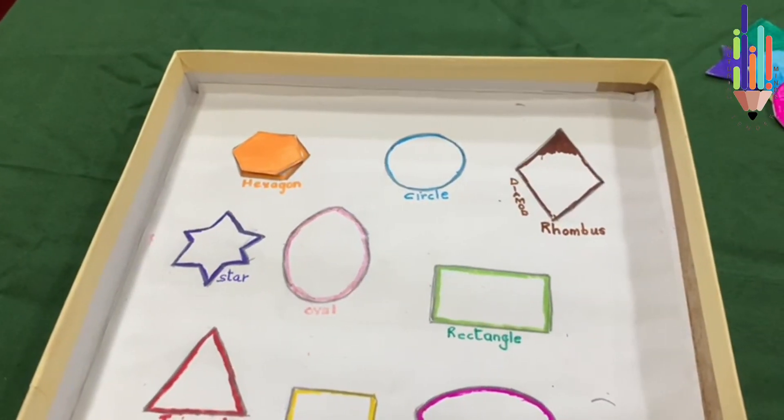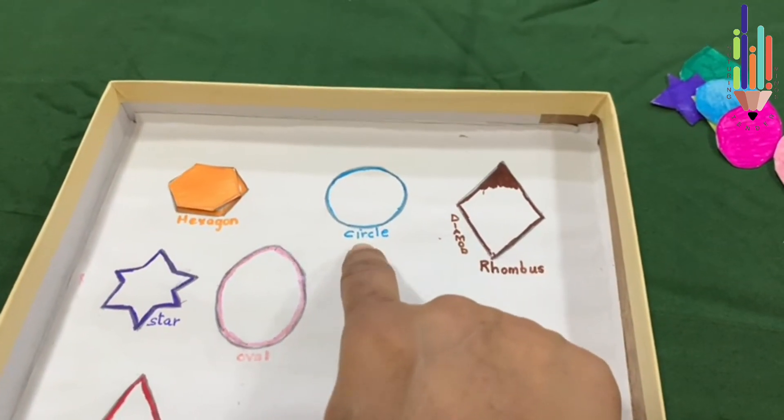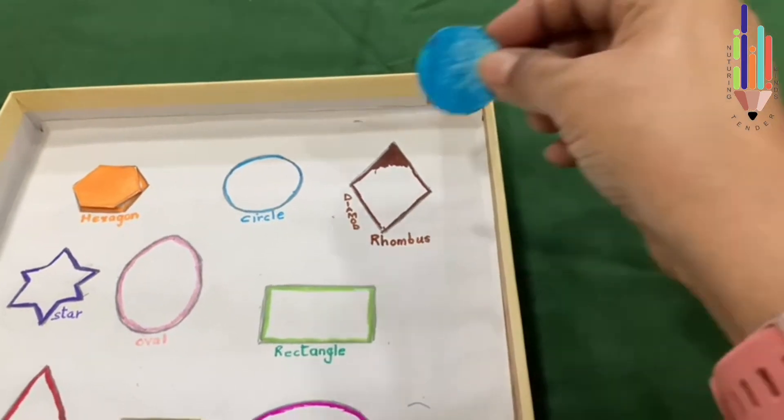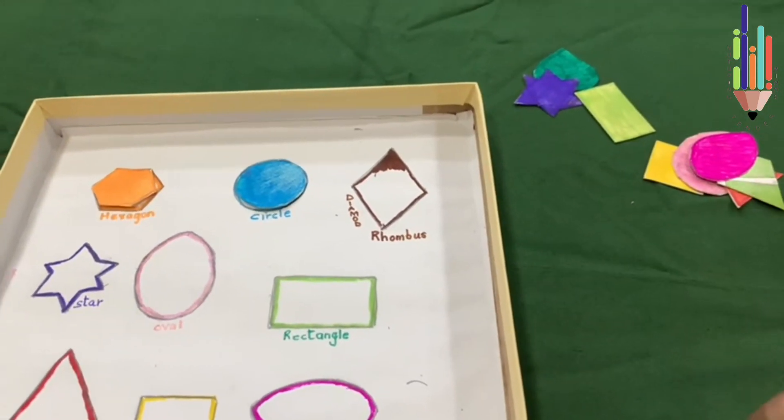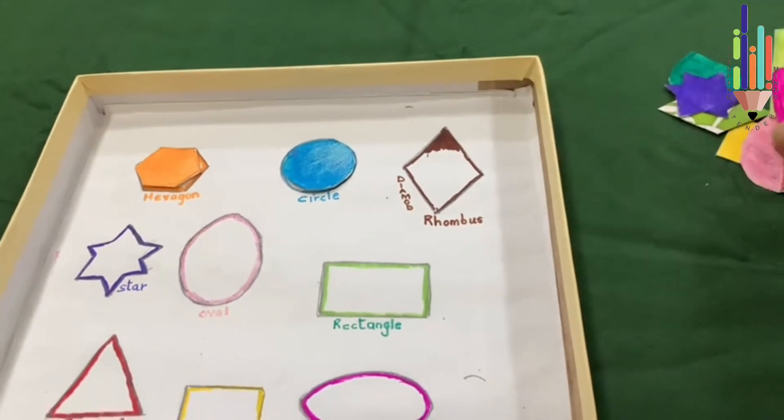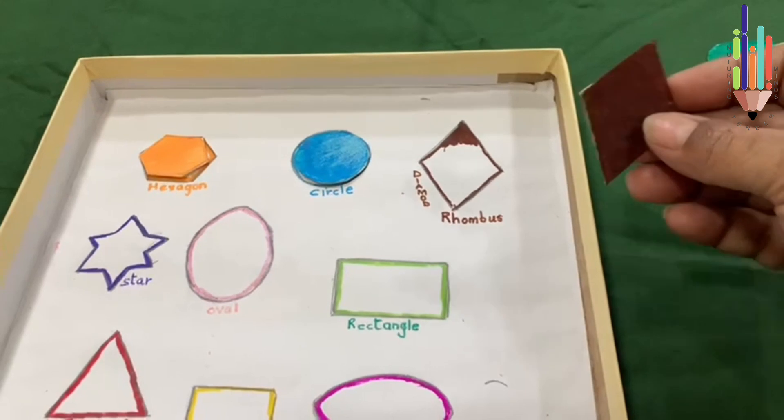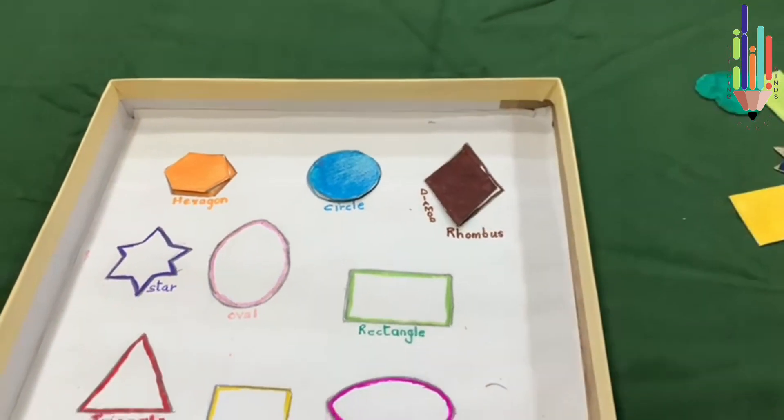Now the second one is a circle which is blue, so I have to search here. Oh, so here is the circle. Take the circle and I place it on this. Now the third one is a diamond shape or a rhombus. It is brown, so here I have got a brown diamond shape. I place it on top of this shape.